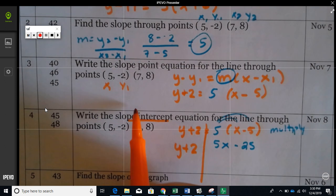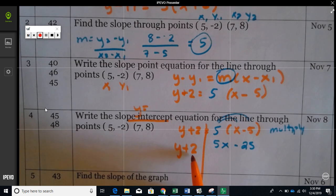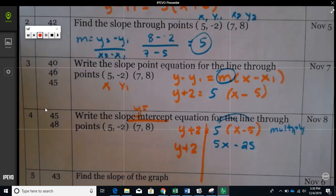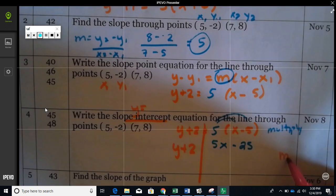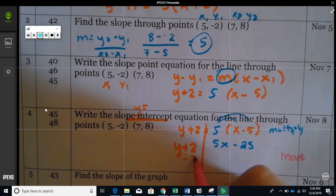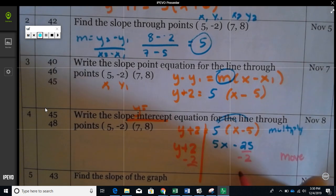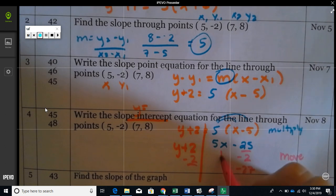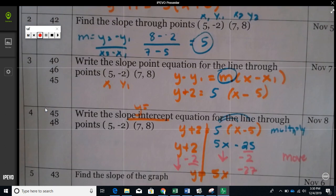It needs to be in y equals when it says slope intercept. That means a y equals equation. Right now it says y plus, so this plus 2 we need to move. First step is to multiply, second step is to move. Since it's plus 2, the opposite of plus 2 is minus 2. You put it here, that equals negative 27, and then you bring everything down. So it's y equals 5x minus 27.